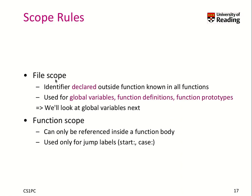Now we talk about file scope. Any identifier that is declared outside of a function or a block is known in all functions. That is used for global variables, function definitions, and function prototypes. Basically, a global variable is available everywhere.